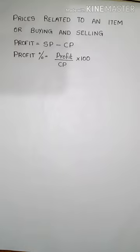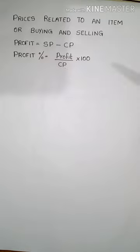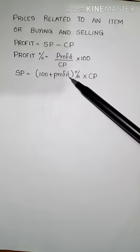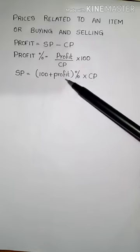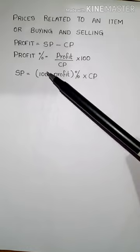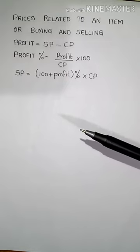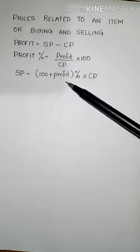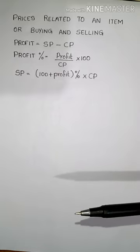Now let us see how you can calculate selling price if profit percentage and cost price are given. Selling price is equal to 100 plus profit percentage, into cost price divided by 100. This formula is the same as the formula you learned for percentage increase, because profit is a term related to increase.